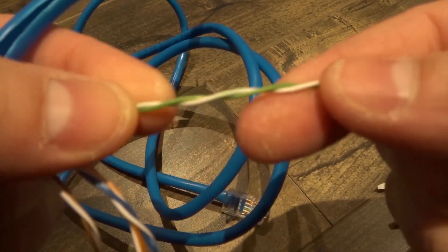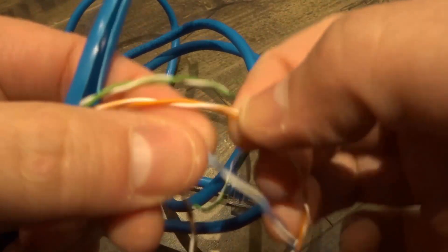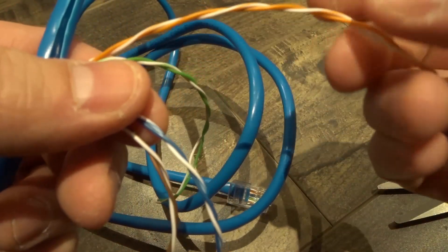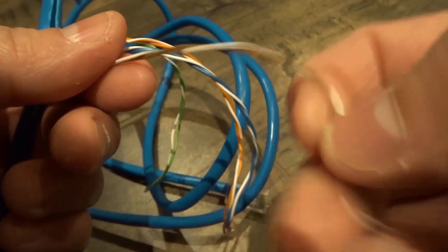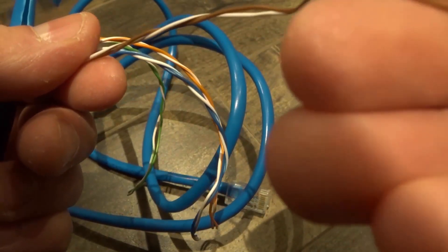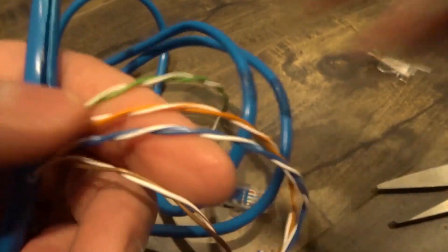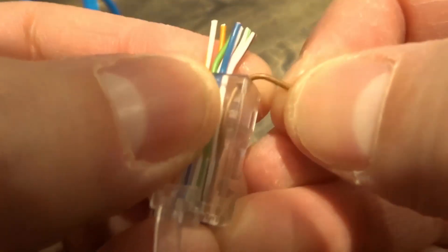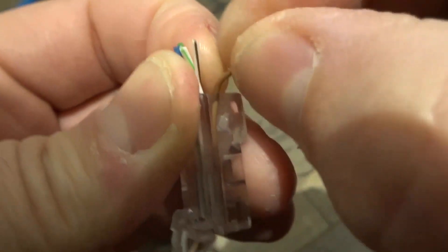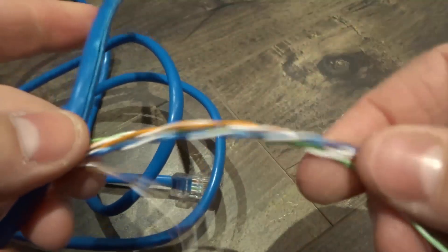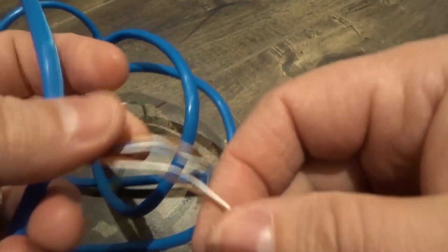If you look, these are actually intertwined with each other, which is interesting. The white and green along with the green are intertwined. The white and orange along with the orange are intertwined. Then the white and blue along with the blue are intertwined. And then the white and brown along with the brown are intertwined. I feel like I missed one when I did it, because I thought that this was an uninsulated one.